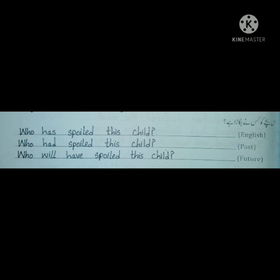In sentences that start with WH word 'who,' the subject is missing. That's why we haven't used any subject after the helping verb. In past perfect, we use the past helping verb: 'Who had spoiled this child?' In future perfect, we use two helping verbs together since the subject is missing: 'Who will have spoiled this child?'